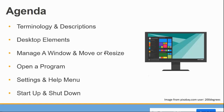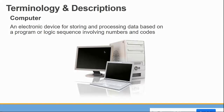We're going to have a two-part approach: first talking about terminology and descriptions, then doing a live demo. So, what is a computer? A computer is essentially an electronic device that stores and processes data based on coded sequences of numbers. If you've heard of binary — basically zeros and ones — think of it like turning a light switch on and off. That's essentially what computer code is based on: yes or no, on or off. Your desktop computer, laptop, or even your smartphone is essentially an electronic device that stores and processes data.